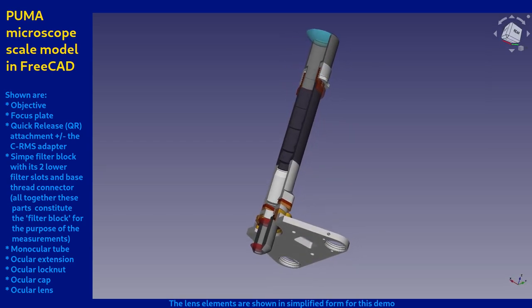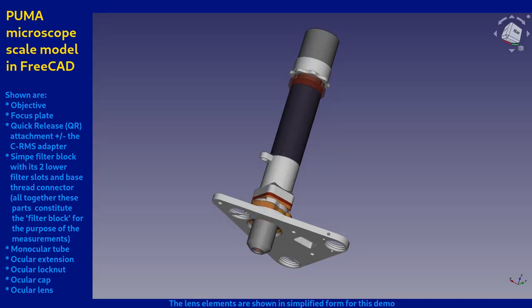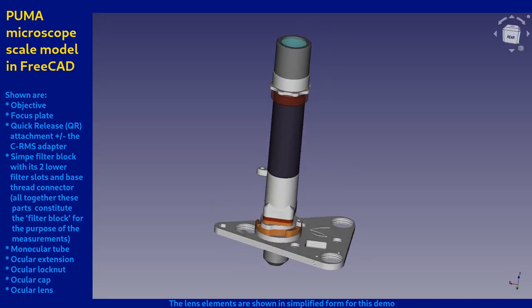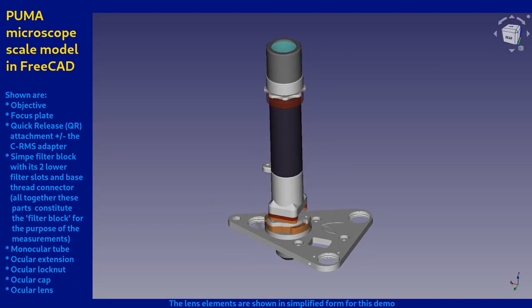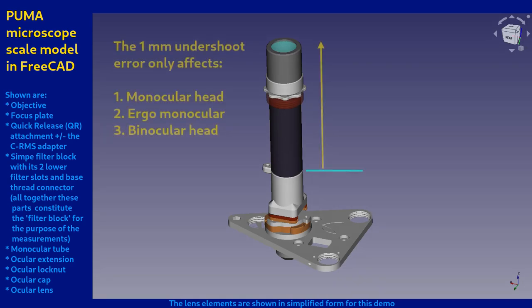I'll also describe how you can correct for it if you have an older Puma scope, and fortunately it is very easy to correct. Note that this error only affected ocular attachments above the filter block. It did not affect the trinocular port.